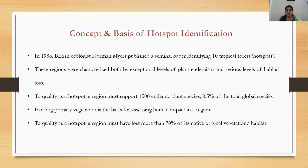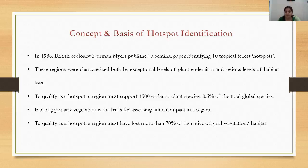Regarding the basis of hotspot identification, in 1988 British ecologist Norman Myers published a seminal paper identifying 10 tropical forest hotspots. These were regions characterized both by exceptional levels of plant endemism and serious levels of habitat loss. Endemism means a plant is native to a specific place and is not found anywhere else in the world. In biodiversity hotspots, these endemic plants are also at serious levels of threat or loss.